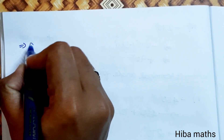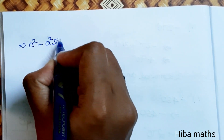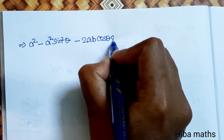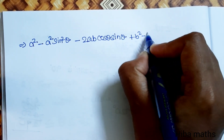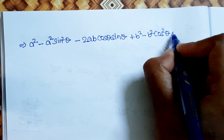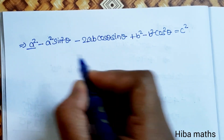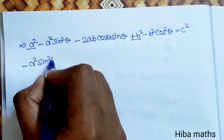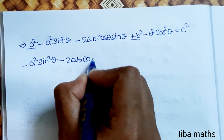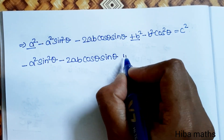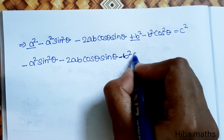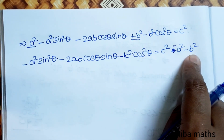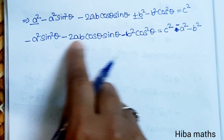Next line: a squared minus a squared sin squared theta minus 2ab cos theta sin theta plus b squared minus b squared cos squared theta equals c squared. Rearranging: a squared sin squared theta minus 2ab cos theta sin theta plus b squared cos squared theta equals a squared plus b squared minus c squared.